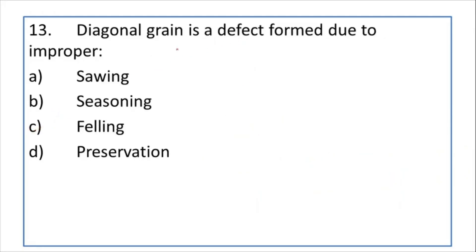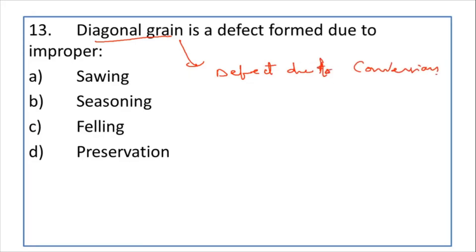Diagonal grain is the defect formed due to improper what? In timber, defects due to conversion occur during cutting or shaping of the timber. Seasoning, filling, and preservation are not conversion processes — sawing is the conversion process. So diagonal grain is a defect formed due to improper sawing.